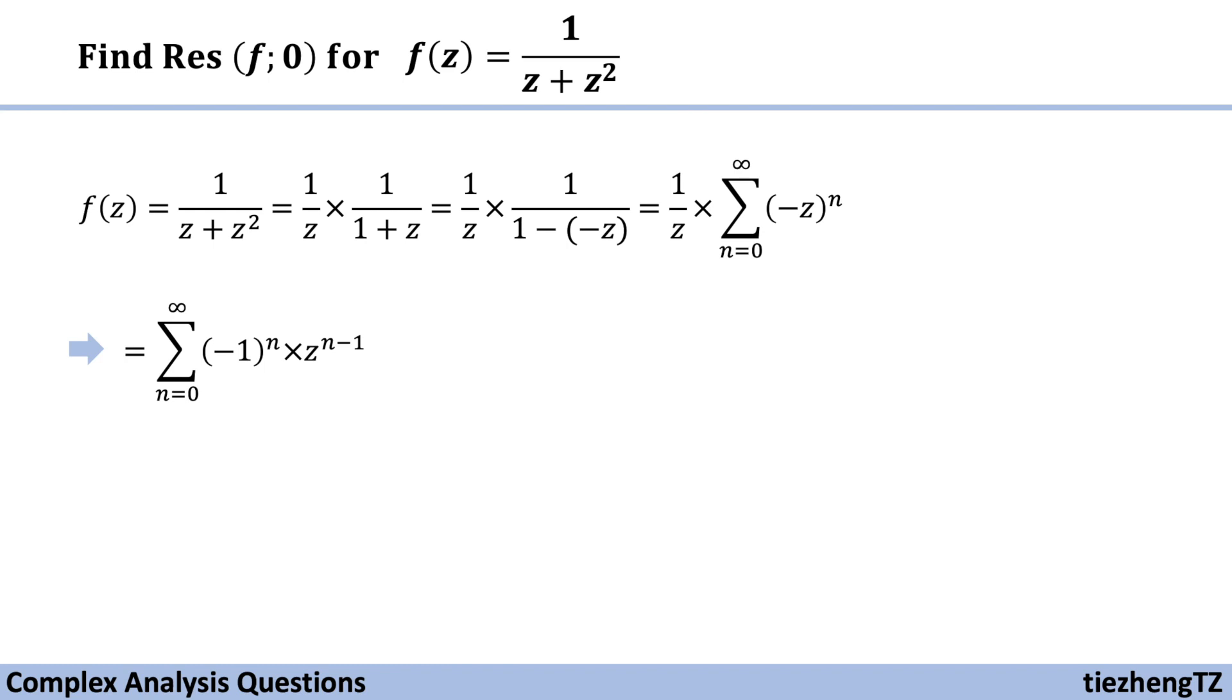Like we just said, in order to find the residue, we need to find the coefficient of the term 1/(z - z₀). And in this case, z₀ = 0. This is given in the question itself.